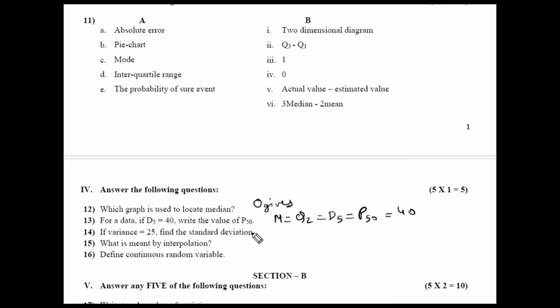If variance is equal to 25, find standard deviation. Standard deviation is equal to root of variance. So, root of 25 is equal to 5 is the answer.